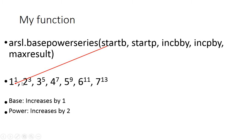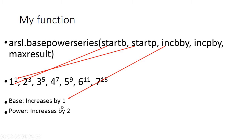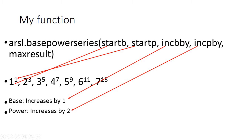The first argument means the starting base. In this series we are starting with base 1, so we put 1 here. Our starting power is also 1. You can change them — for example, your series could start from base 2 or 3, and your power could start with 3, 5, or 7. The base is increasing by 1, so you put 1 there, and the power is increasing by 2, so you put 2. The last argument is the maximum result.